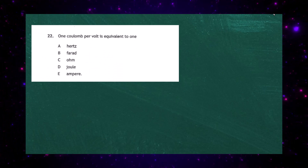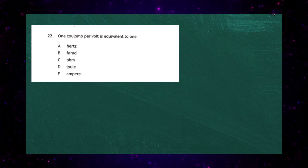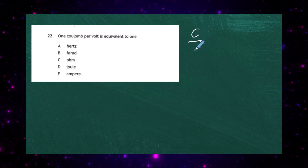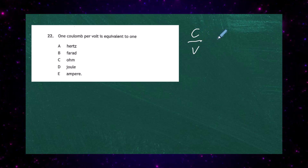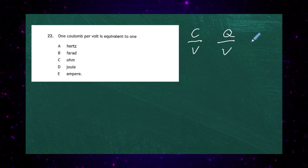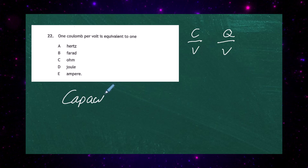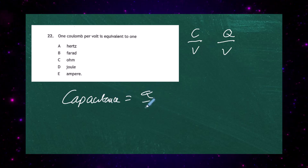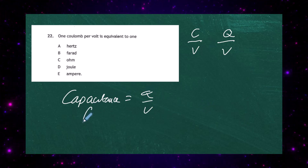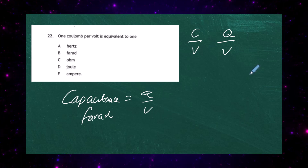Question 22 from the 2023 Higher Physics Exam paper 1. One coulomb per volt is equivalent to what? The coulomb is associated with charge Q, and a volt is the voltage V. We're looking for a relationship with charge divided by voltage, which is a capacitor. Capacitance equals Q over V, giving units of coulomb per volt, and capacitance is measured in the farad. So 1 farad equals 1 coulomb per volt.